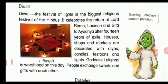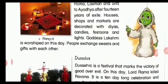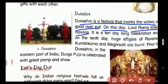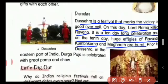The next festival is Dussehra. Dussehra is a festival that marks the victory of good over evil. On this day, Lord Ram killed Ravan. It is a 10-day-long celebration, and on the 10th day, the huge effigies of Ravan, Kumbhakaran, and Meghnath are burned.